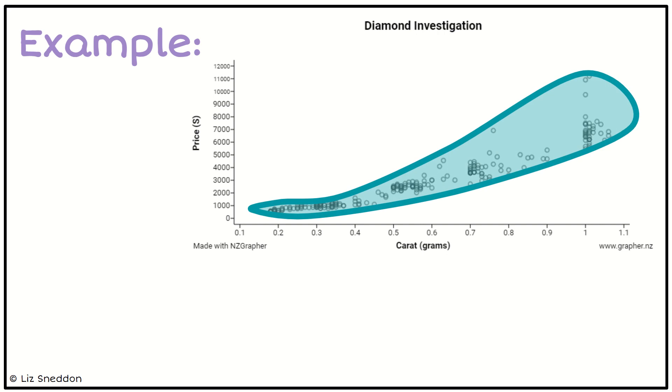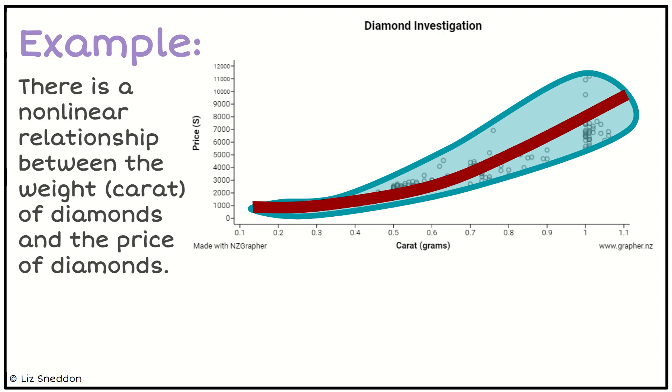So we're going to draw our blob around the data. Now what I do is I want to draw a line through the middle of the data. So I kind of want to get it so it's roughly half above, half below throughout. And as I look at that red line that I've drawn, it does not look like a straight line. So it's not a linear model. So what we have here is a non-linear model. So that's what I want to describe.